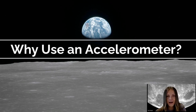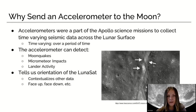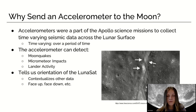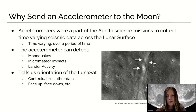Hi everyone, my name is Erin Amire, and I'm going to tell you about why to use an accelerometer. So why send an accelerometer to the moon? Accelerometers were a part of the Apollo science missions to collect time-varying seismic data across the lunar surface. The accelerometer can detect moon quakes, micrometeor impacts, lander activity, and it can also tell us about the orientation — whether it's face up or face down — based off the data output we see on our serial monitors.